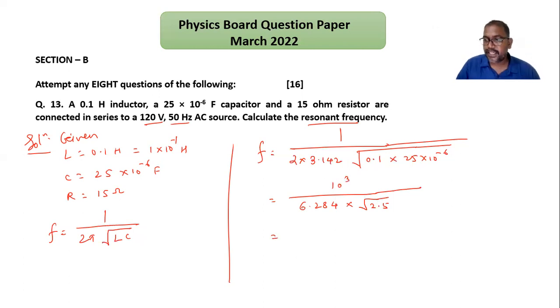After that, we can write this as 1000 divided by 9.935. This is the calculation, which is coming to 100.65 hertz.